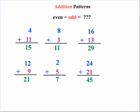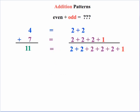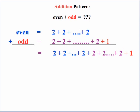What about even plus odd? The pattern seems to be that the sums are coming out odd. Breaking it down: the even number 4 is 2 plus 2, and the odd number 7 is 2 plus 2 plus 2 plus 1. When we combine them, we get 11 — with a plus 1 at the end making the answer odd. In the generic case, our even number is a bunch of 2s, and our odd number is a bunch of 2s plus 1 at the end. Combining them gives all the 2s from the even plus all the 2s from the odd plus 1 — which is still going to give us an odd number for the sum.